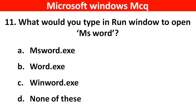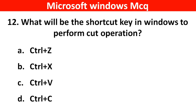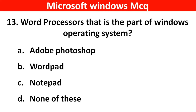Next question: What would you type in Run Windows to open MS Word? Right answer is Option C: WinWord.exe. Next question: What will be the shortcut key in Windows to perform CUT operation? Right answer is Option B: Ctrl plus X. Next question: What processor is part of Windows operating system? Right answer is Option A: Adobe Photoshop.